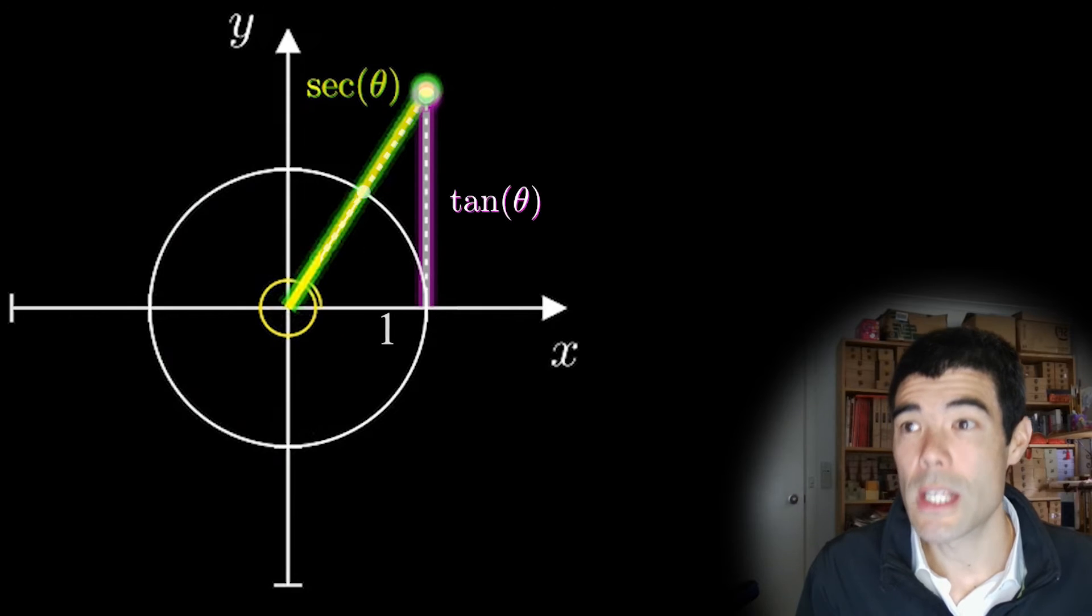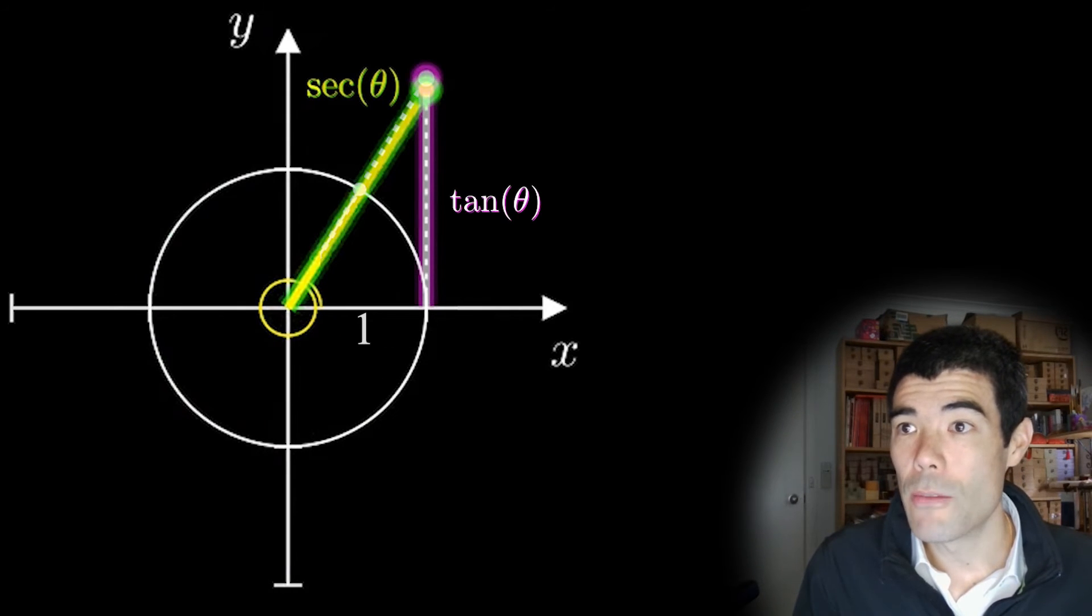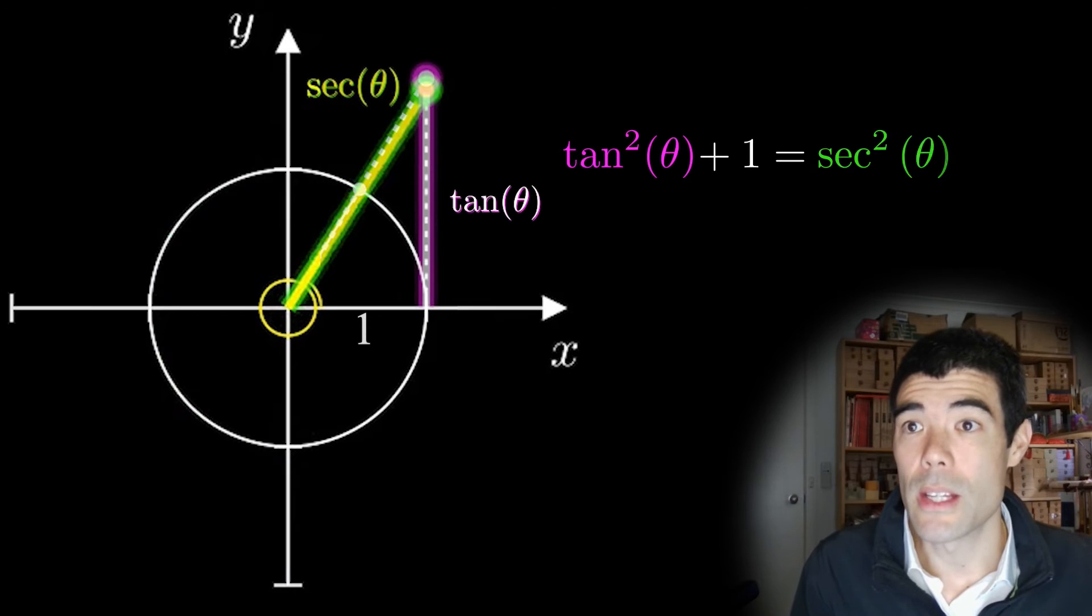And also, if we show the tan of theta there again, in that same triangle, we can see where the formula tan squared plus 1 is equal to sec squared comes from using the Pythagorean theorem.